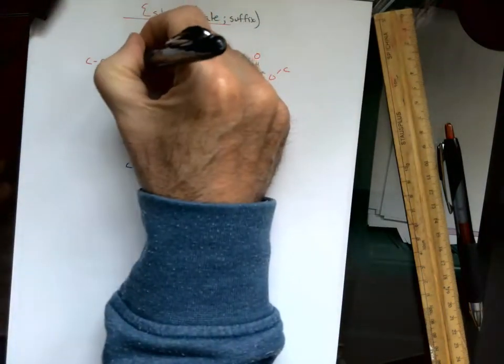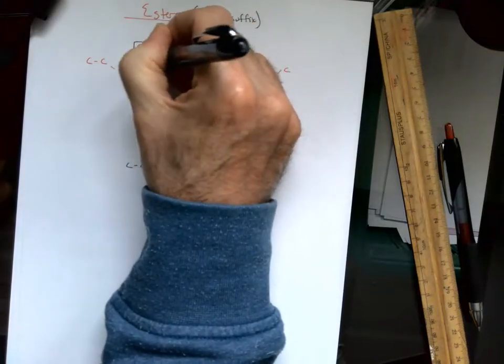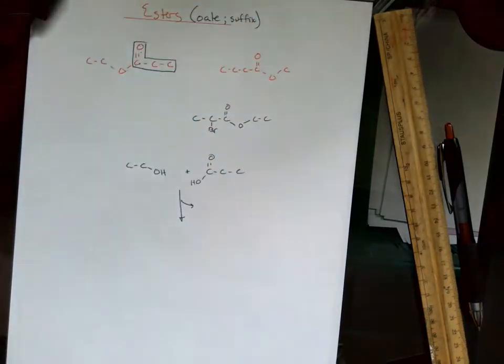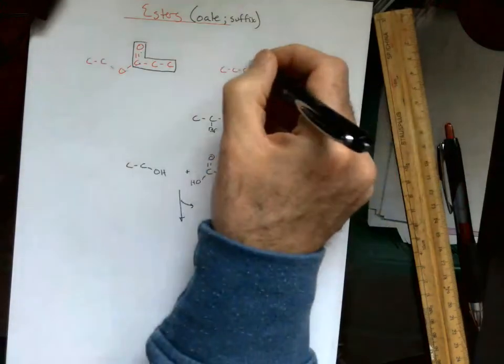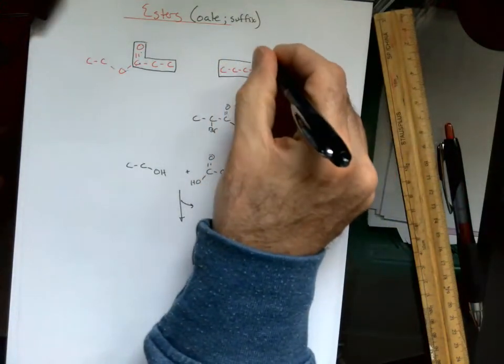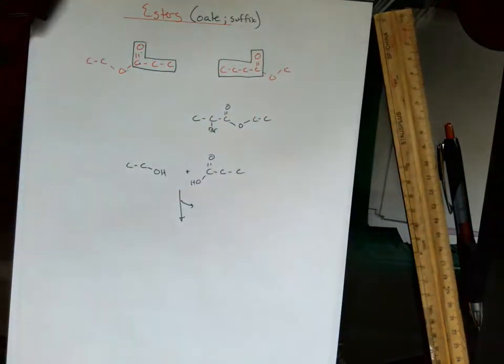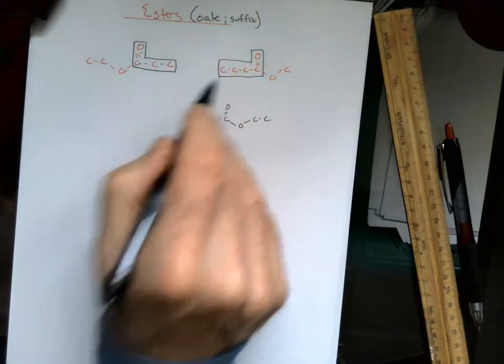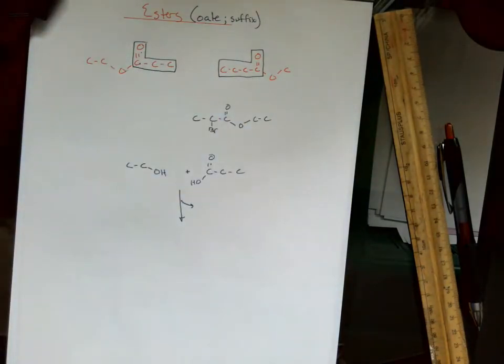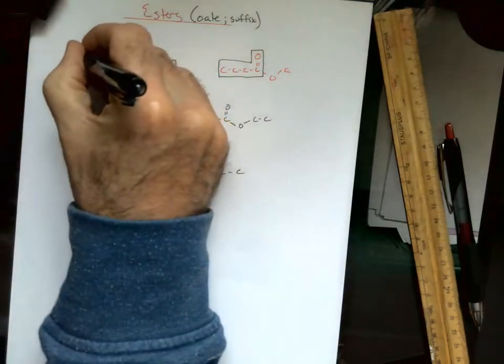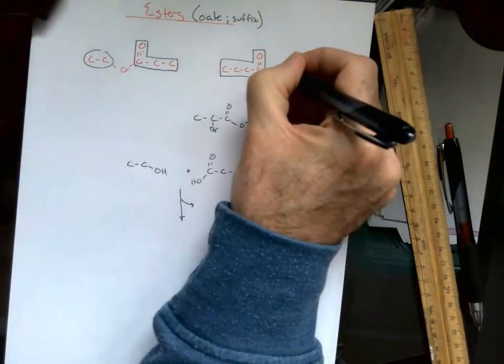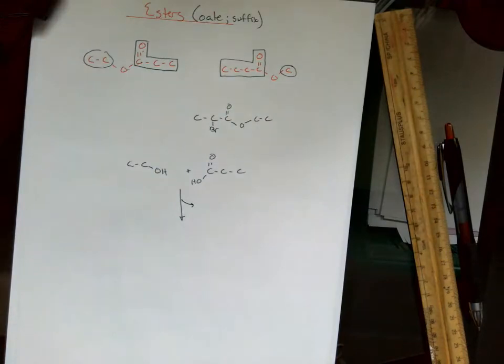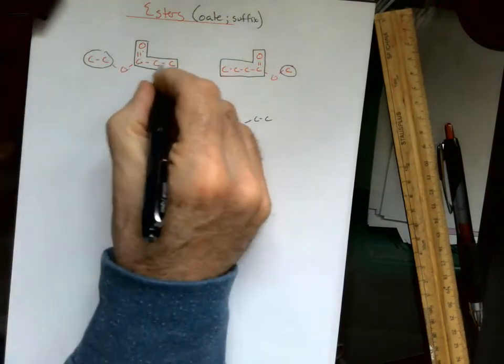The first thing I do when I see an ester is I put a box around the section that's the C double bonded to an O, because they can write these forwards or backwards, so you have to make sure you know what you're looking at. I then circle the carbon chain like this. Okay, so your longest chain